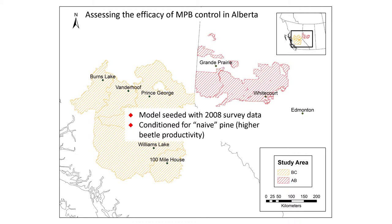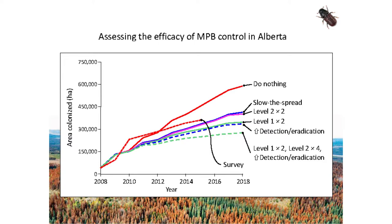Taking the validated model to Alberta, we asked whether spread has been managed by slow-the-spread activities. We ran a scenario with the slow-the-spread strategy and compared the area colonized against actual survey data — and we got good agreement, confirming the model is performing realistically. We then compared against a do-nothing scenario, and there is a significant increase in area occupied under the do-nothing approach. This strongly suggests that efforts to date have produced a meaningful, realistic reduction in mountain pine beetle spread across the province.